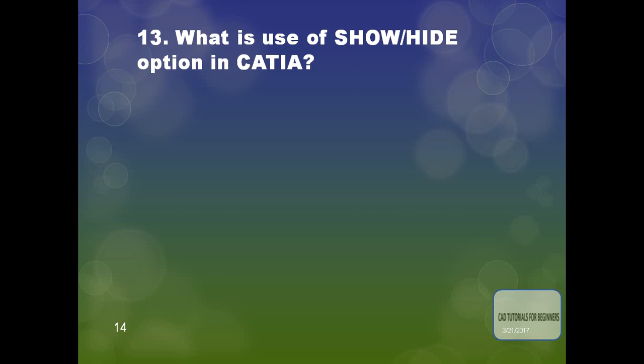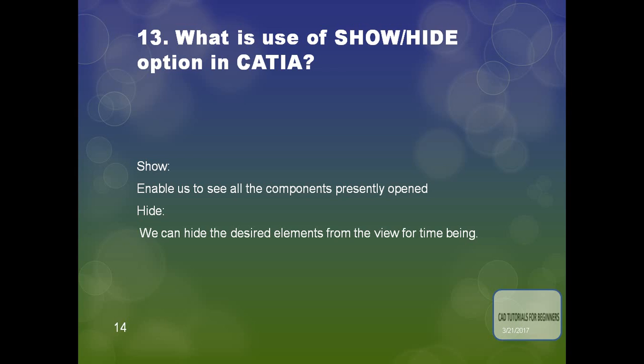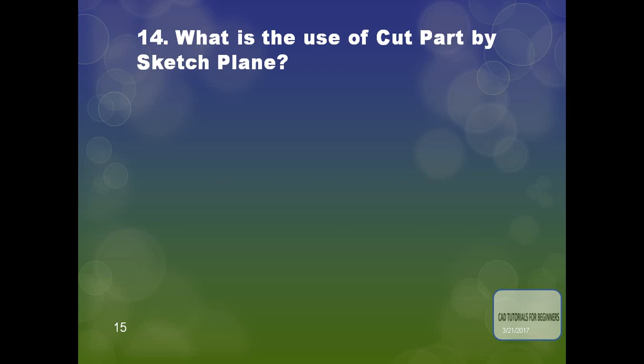The next question is: what is the use of the Show/Hide option in CATIA? The Show command enables us to see all the components presently opened in the graphics window. The Hide option enables us to hide desired elements from the view temporarily.